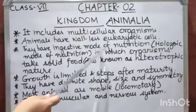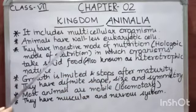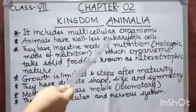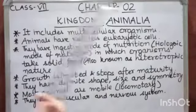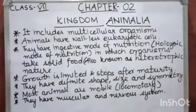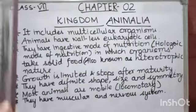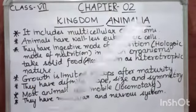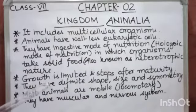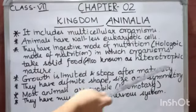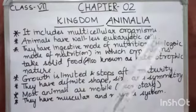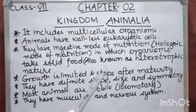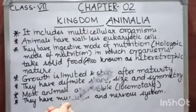Animals have an ingestive or holozoic mode of nutrition — in this type of nutrition, organisms take in solid food. They depend on other organisms, or on dead or decaying organisms, for their food. Growth in animals is limited and stops after maturity, just like in human beings — their growth stops when they reach maturity.